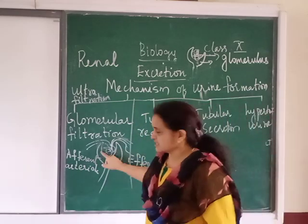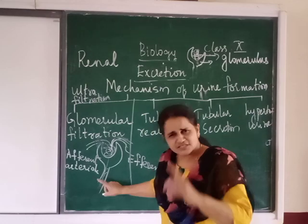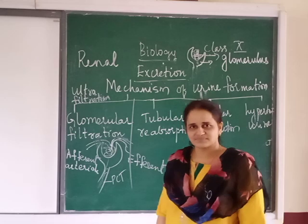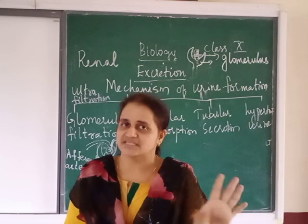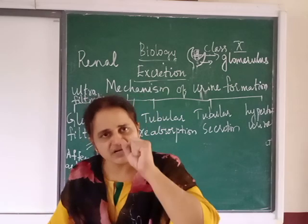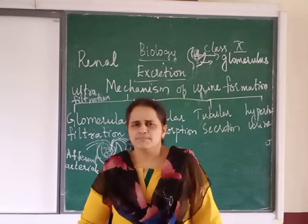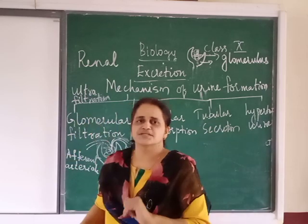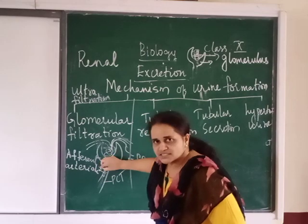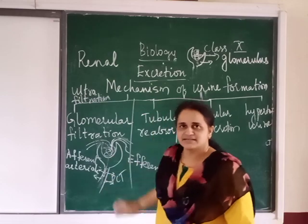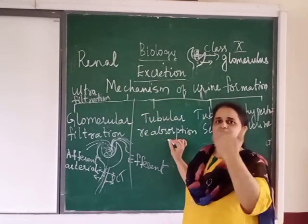After glomerular filtration, the filtrate enters the renal tubule — first into the PCT. The filtrate contains water, salts, urea, ammonia, and waste. Whatever is useful to the body — like potassium, calcium, or sodium ions — is reabsorbed back into the blood as the filtrate passes through the tubule. This is tubular reabsorption: whatever is needed, we take back. Only waste continues down.